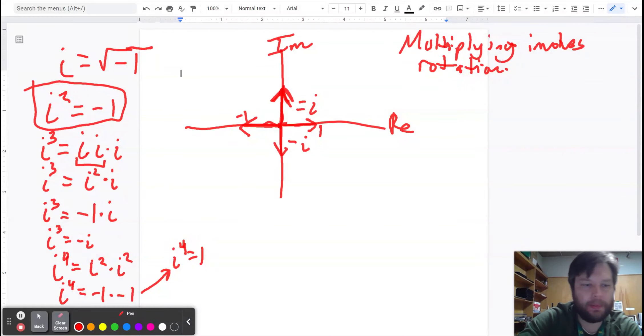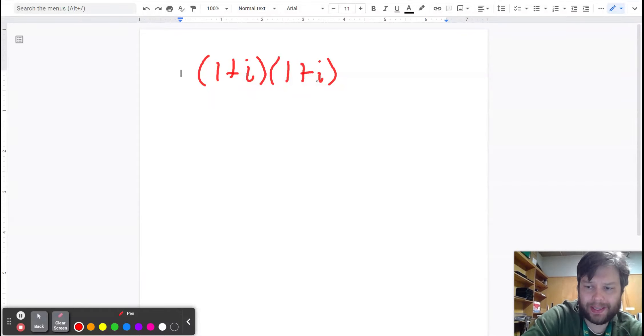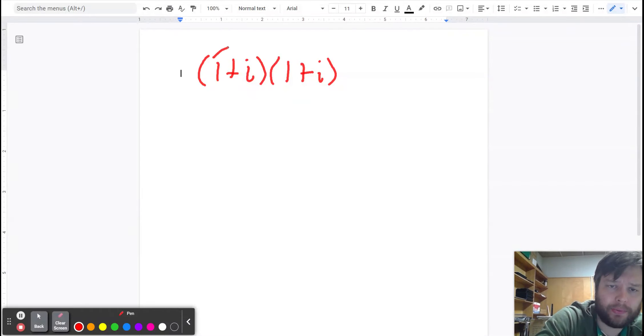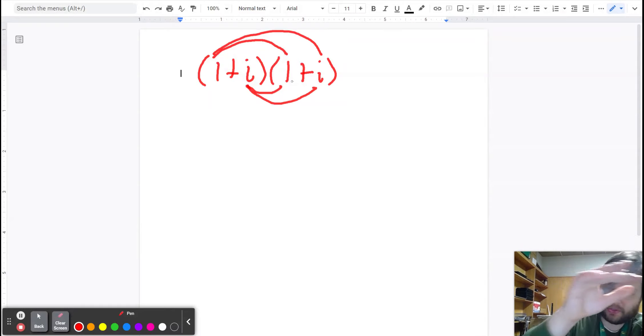Let's look at another example. I'm going to take one plus i times one plus i. Now when I look at this, this reminds me of when we just did regular old foil. One times one. One times i. i times one. i times i. If you prefer to draw out the box, you can draw out the box. I'm not going to draw out the box for this one.